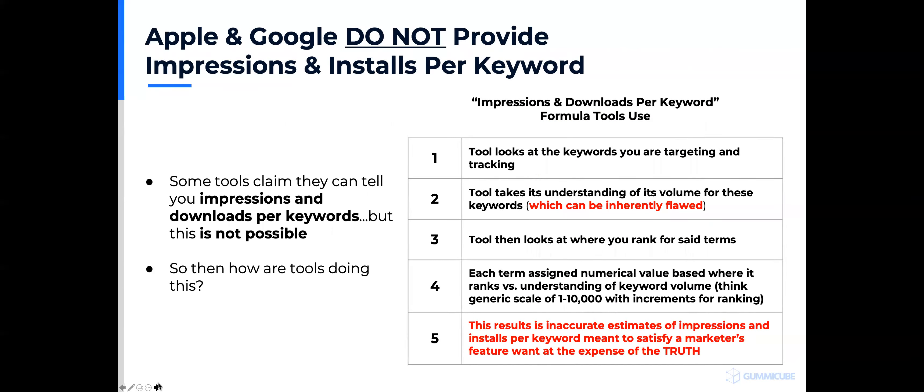One issue that came up recently with a client: some tool had impression and download data per keyword. There's a lack of transparency in the industry about where data comes from. When someone says how many impressions a keyword has, users assume that data is coming from the App Store or Play Store. Unfortunately, Apple and Google do not provide data about impressions and downloads per keyword. There is no API, no source of information Apple and Google provide where a tool can pull that in.